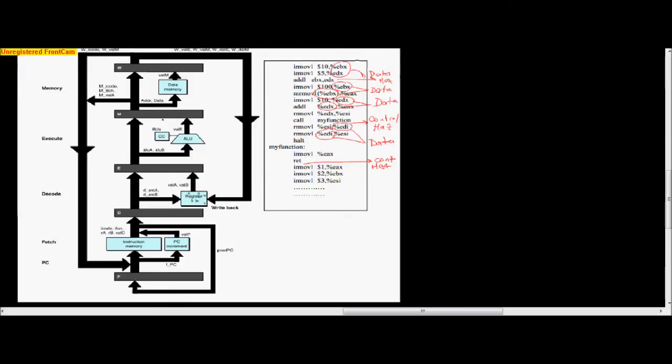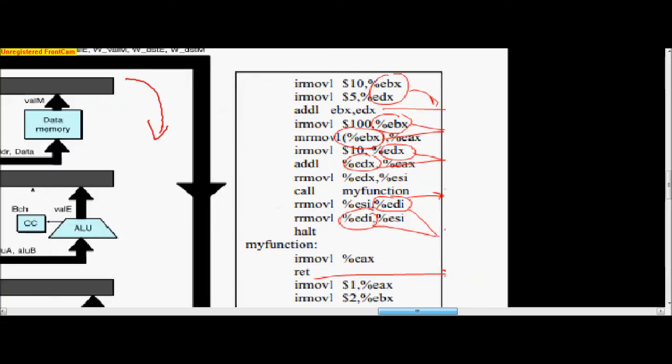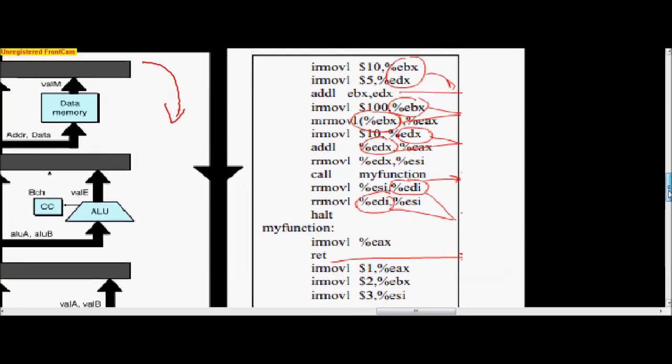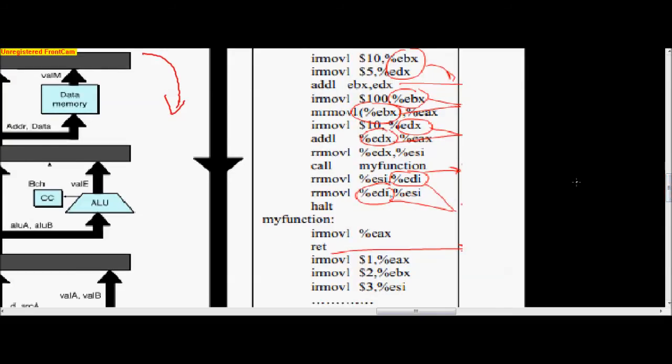Now that we know that, let's see if we can make some sense out of this problem. This shows our different stages: fetch, decode, execute, memory, and write back. The problem says, read the code and pick out possible issues in terms of data and control hazards. Let's take a look at this. We've got EBX and EDX here, and then the third line adds these two registers. This creates a data hazard.